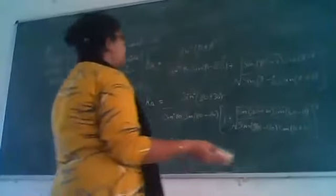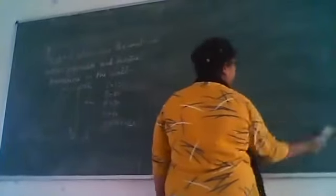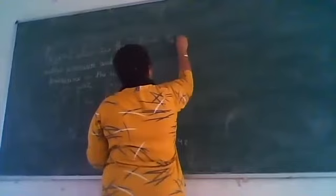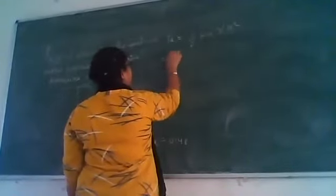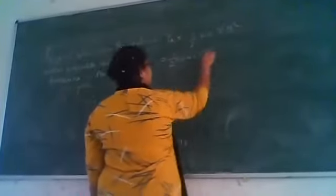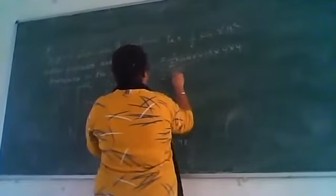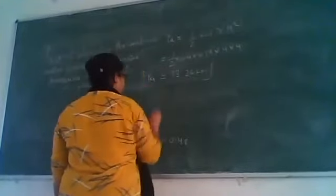Next is finding Pa value. Pa is one-half Ka gamma h squared. Pa equals one-half times 0.49 times 19 times 4 squared. The value of Pa is 73.26 kN per meter. This is my Pa and this is my Ka.